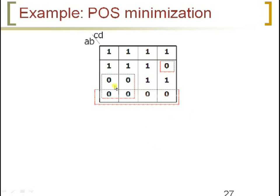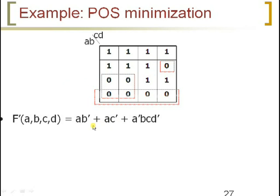We have to only group zeros, not ones. We consider only the zeros, which are the max sums. I have gone with three groupings — three blocks — where two blocks have size four and one block has size one. If you consider the first block, the value of A is constant at one, and the value of B is also constant at zero. Therefore we get A B-bar for that block.